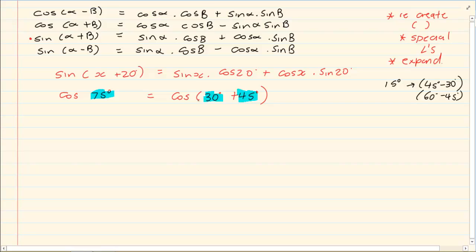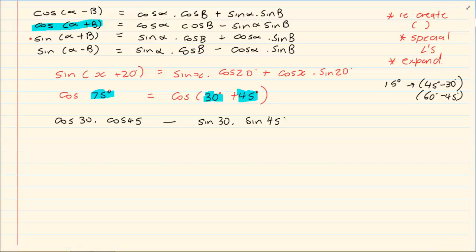Now once we have written the brackets out, we now go and expand it. We know it's cos(α+β), so we have cos(30)cos(45) - sin(30)sin(45). From here we go to special angles. We know cos(30) is a special angle, cos(45).